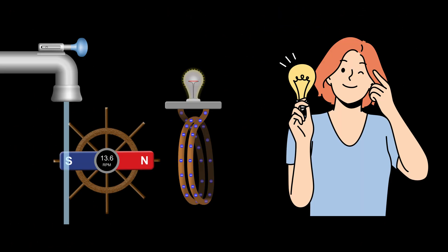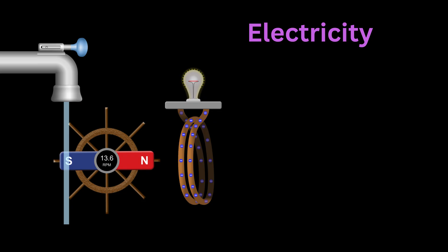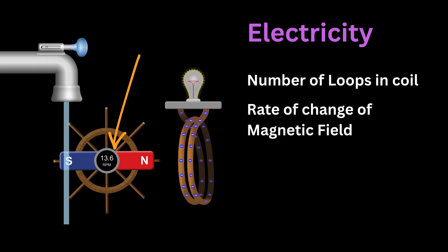From all this, a clear pattern begins to form in your mind. The electricity being generated depends on how many loops of wire there are, how quickly the magnetic field is changing, and how big the area of the coil is that the field passes through.